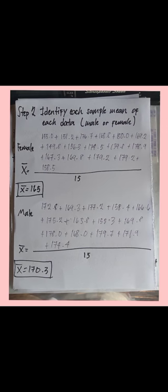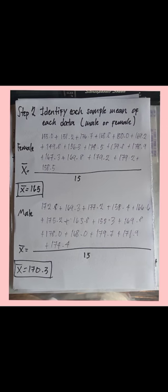Step 2: Identify the sample mean for each group, male or female. We added all female local heights and divided by 15, so the female sample mean is equal to 165. Likewise, we added all male heights and divided by 15, so the male sample mean is 170.3.